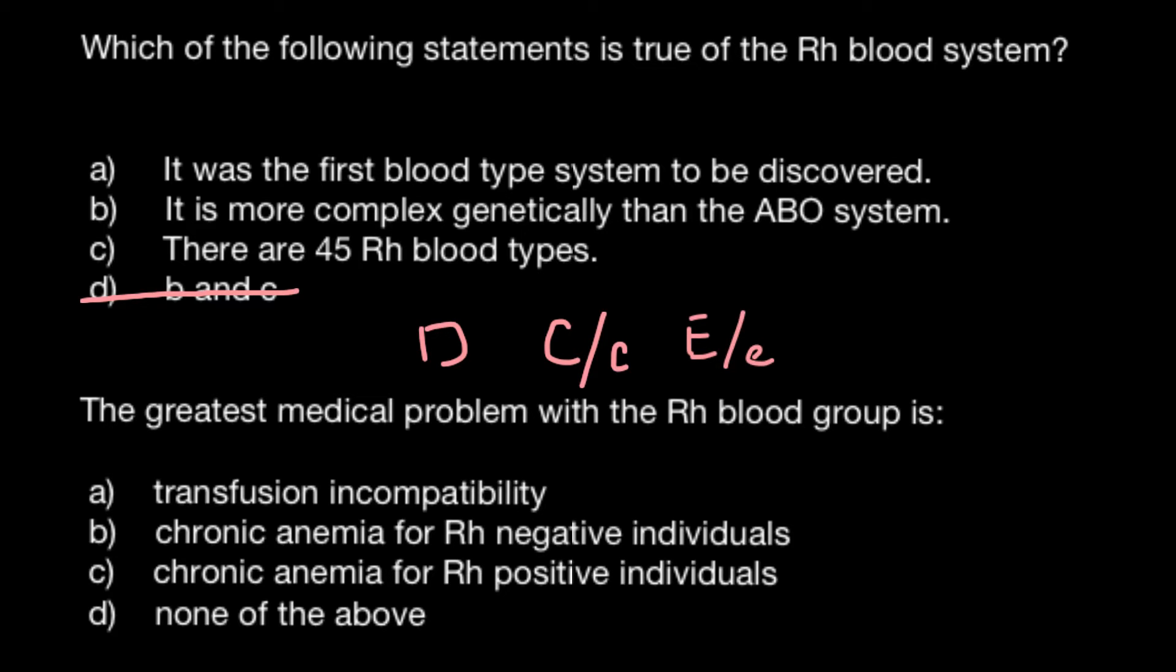As you see, we don't have a recessive allele for gene D, because gene D can either be absent or present. If it is present we just put D.